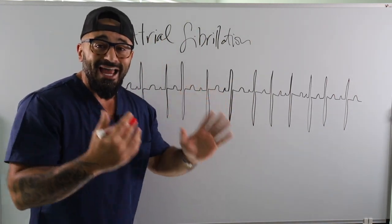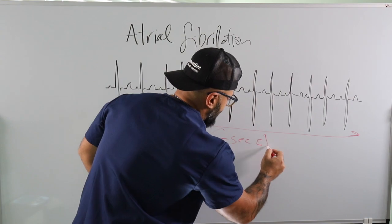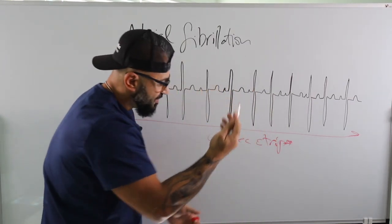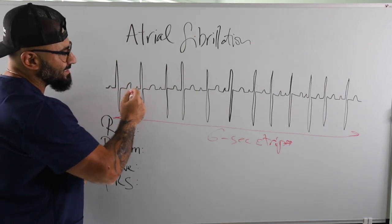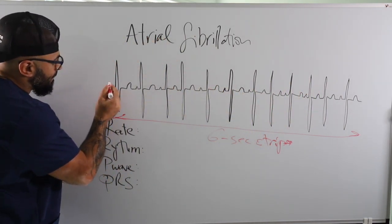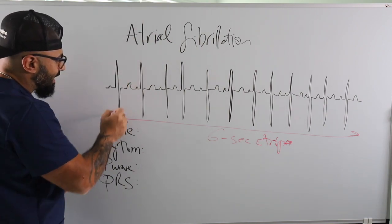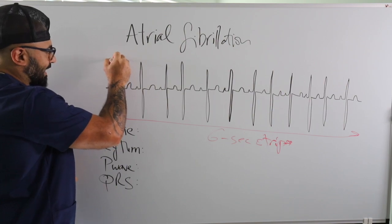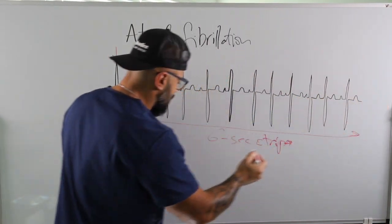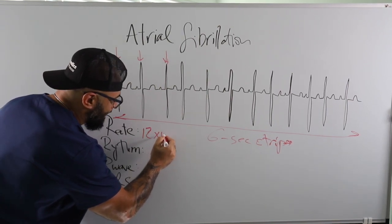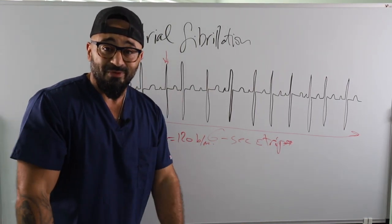Let's say this rhythm, from here all the way to there, is a six-second strip. How do I calculate the rate? What I do is count how many QRSs we have on the strip. This is called a P-wave, this is called a QRS, and this is called a T-wave. I'm counting the QRSs: one, two, three, four, five, six, seven, eight, nine, ten, eleven, twelve. I've got twelve, and I multiply by ten because this is a six-second strip. So the heart rate is 120 beats per minute.